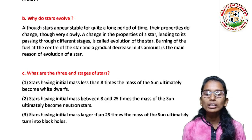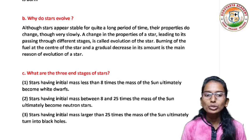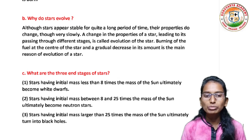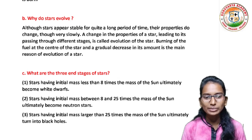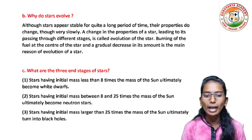What are the three end stages of stars? Stars having initial mass less than 8 times the mass of the sun ultimately become white dwarfs. Stars having initial mass between 8 and 25 times the mass of the sun ultimately become neutron stars. Stars having initial mass larger than 25 times the mass of the sun ultimately turn into black holes.